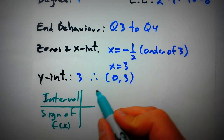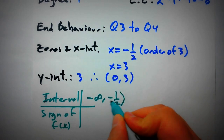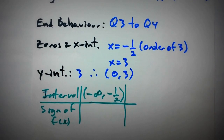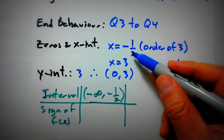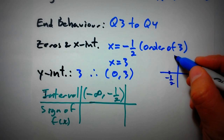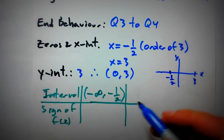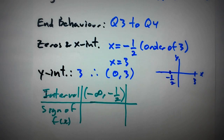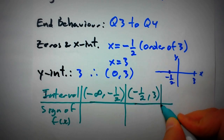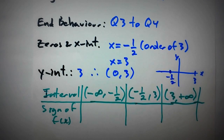The intervals are determined by our x-intercepts at x = negative 1/2 and x = 3. It might help to do a rough sketch first to visualize them. So our three intervals are: negative infinity to negative 1/2, negative 1/2 to 3, and 3 to positive infinity.